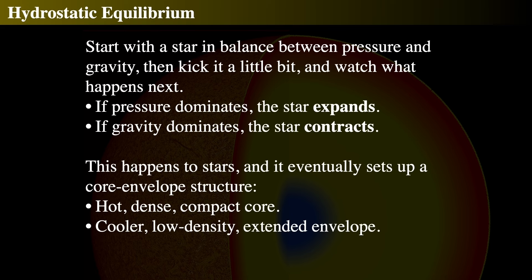If you kick the star just a little bit, what happens? If pressure dominates, the star will expand. If gravity dominates, it'll contract. If it contracts a little bit, the pressure pushes back and expands. There's an oscillation that gets balanced out in hydrostatic equilibrium. Eventually, as it oscillates between pressure pushing out and gravity pulling in, it settles down — you get a setup where the core is very hot, very dense, and really compact, surrounded by a much cooler, much lower density envelope around the core.